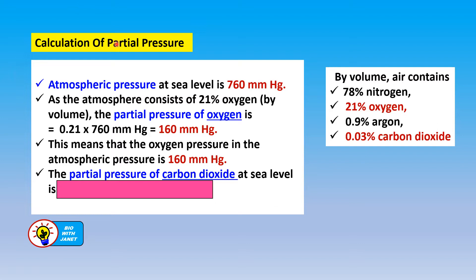Let's calculate the partial pressure of gases in the atmosphere to better understand the term partial pressure. Atmospheric pressure at sea level is 760 mmHg. Since the atmosphere consists of 21% oxygen by volume, the partial pressure of oxygen is 21% of 760 mmHg, which is 0.21 × 760, giving a partial pressure of oxygen of 160 mmHg.